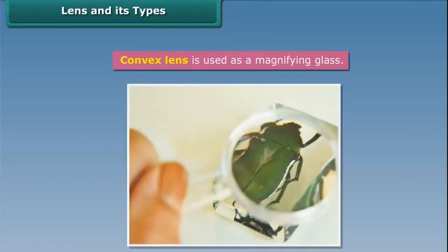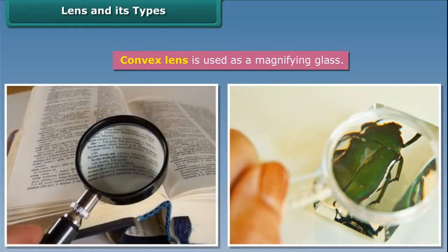We must have used a magnifying glass to observe the body parts of an insect, or used it to read small prints. Have you observed its shape? It is convex. Hence, a convex lens is used as a magnifying glass.